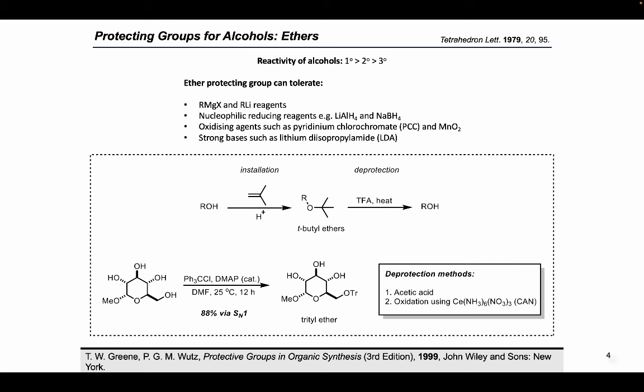The tert-butyl group is an exception and has found some use as a hydroxy protecting group. Owing to the stability of the tert-butyl cation, tert-butyl ethers can be cleaved under moderately acidic conditions, and trifluoroacetic acid is frequently used for that purpose. The tert-butyl group is normally introduced by reaction of the alcohol with isobutylene in the presence of an acid catalyst. The trityl group is removed under even milder conditions and is an important hydroxy protecting group especially in carbohydrate chemistry.